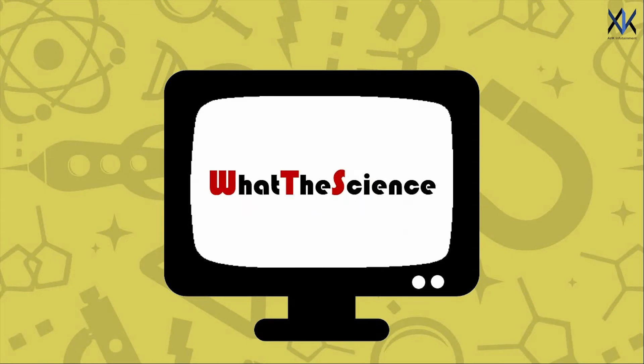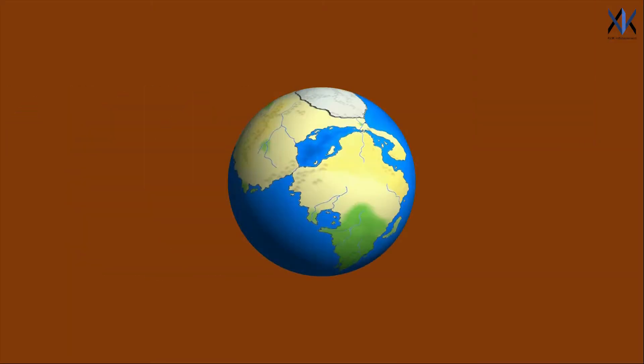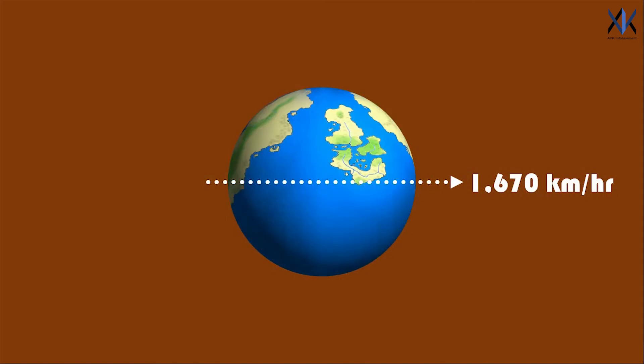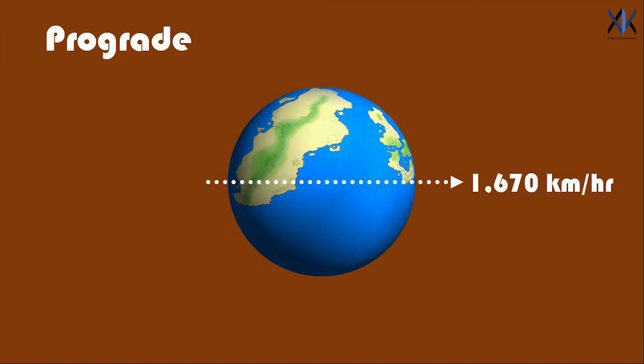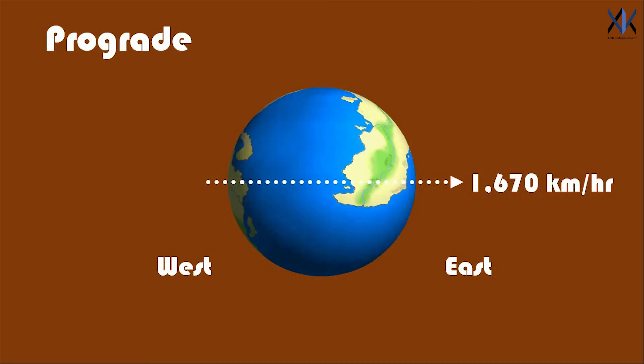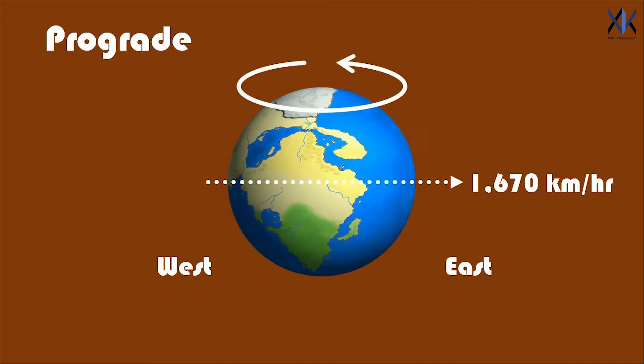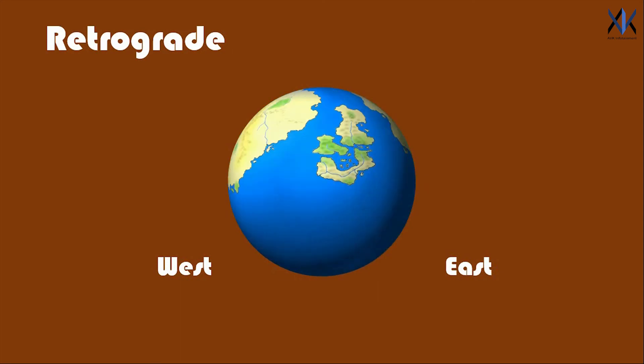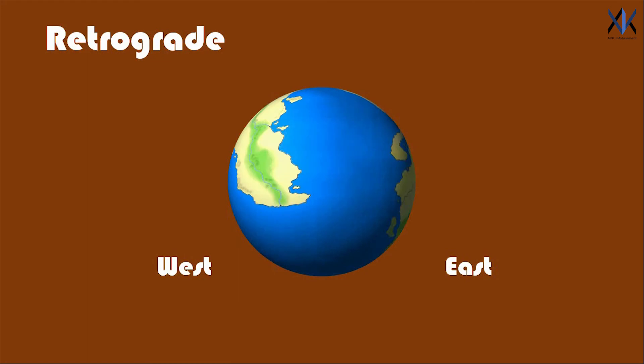Hello CyberCitizens, welcome to What the Science. Our Earth rotates at a constant speed of 1670 km per hour at the equator. Its rotation is prograde or west to east or counterclockwise when viewed from the North Pole. So let's just say that it goes retrograde, that is rotating in the clockwise direction or from east to west. What happens now?